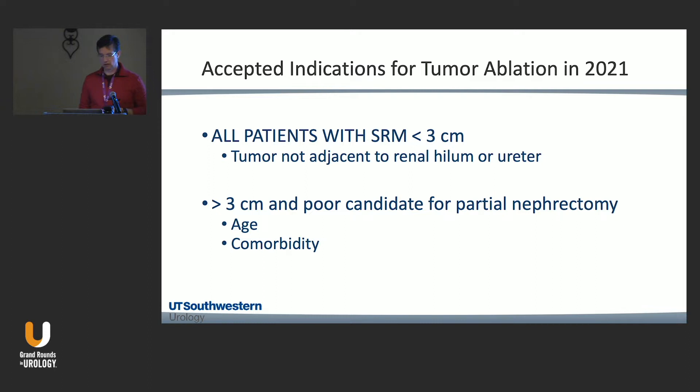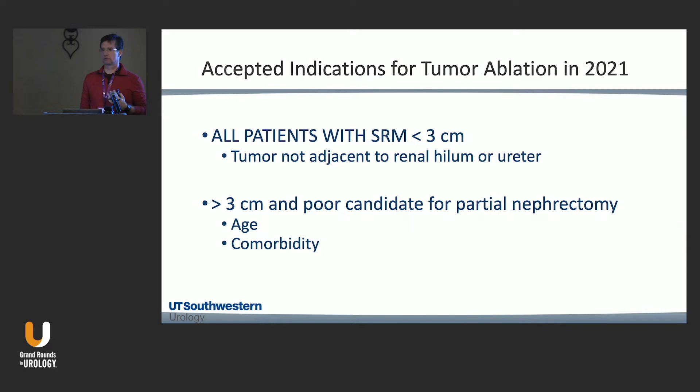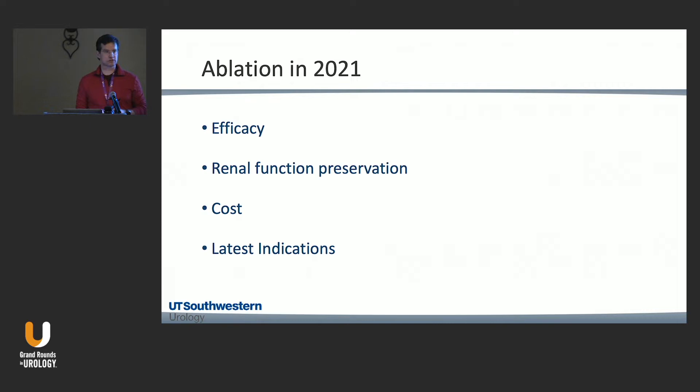You don't want to burn the ureter or freeze the bowel, but if the location is approachable it has to be discussed. Even over three centimeters there is literature — I treat four and five centimeter tumors that may not be candidates for surgery due to age or comorbidity. Over three centimeters, surgery without discussing ablation is acceptable, but under three centimeters you must discuss ablation as an option with your patients.